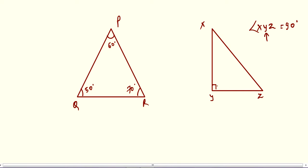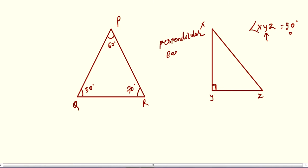As you can see, we have angle at Y which equals 90 degrees. In chapter 16, Pythagoras theorem, we studied that in a right angle triangle we have three sides: perpendicular, base, and hypotenuse.